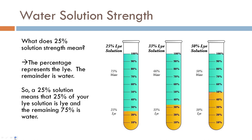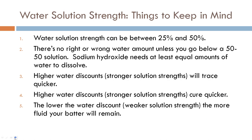Generally you're not going to go any lower than 25%, which is a 3-to-1 ratio — that's a lot of water. Most lye calculators, if they don't give you the option to control your water, are calculating water around a 28 to 29% solution strength, which is that 2.5-to-1 ratio. I generally like to work around 33% water solution strength, getting closer to that 2-to-1 ratio, which is just my preferred approach.